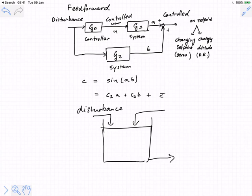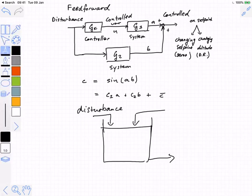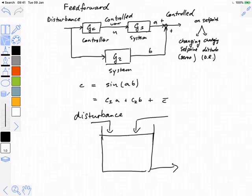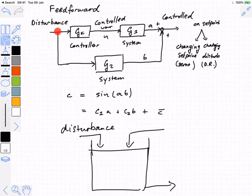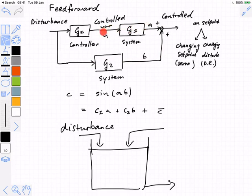The point is that those boxes both represent the system. The one box represents the system's response to the disturbance. This transfer function tells me how the disturbance affects the control variable. This transfer function here tells me — if my manipulated variable changes, this is what the controller can change — how does that affect the control variable?